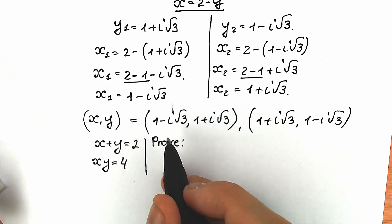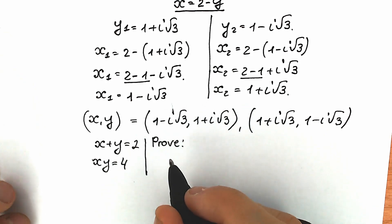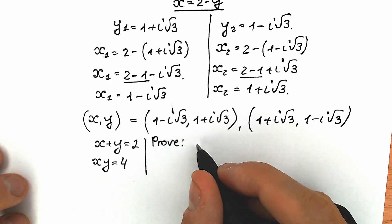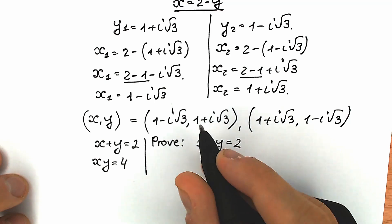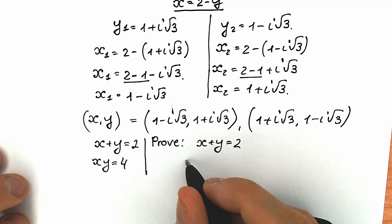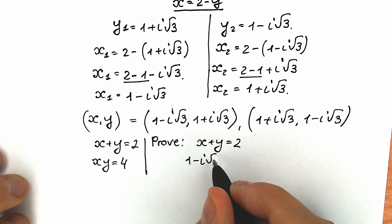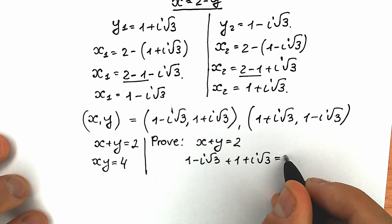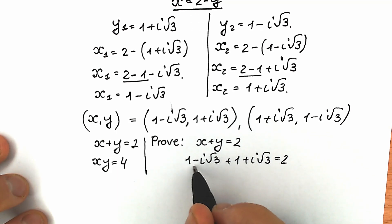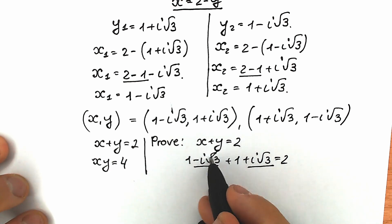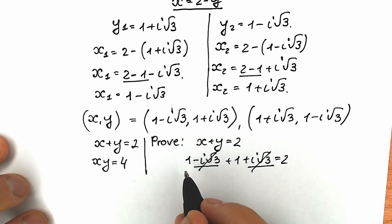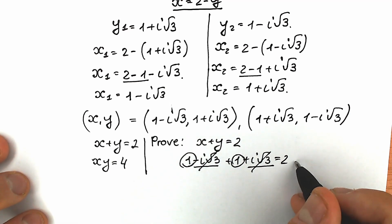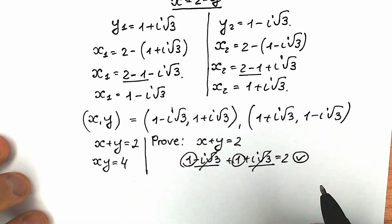Let's check x plus y equals 2 for the first pair. We have (1 minus i√3) plus (1 plus i√3) equals 2. The minus i√3 and plus i√3 cancel each other. So we have 1 plus 1, which equals 2. The first equation checks out — really great.